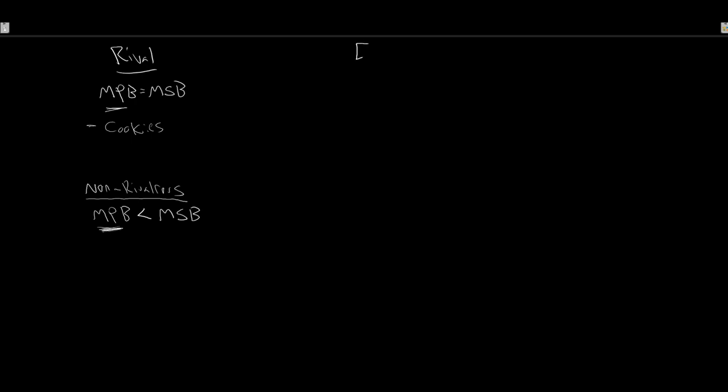We also have excludability. Excludable means you have to pay for it — we can actually make you pay. For an excludable good, your marginal private cost is the same as the marginal social cost. You have to pay, so your cost of consuming is the same as the social cost. The key question excludability asks is: is it easy to charge a price for this — to make people pay in order to utilize it?